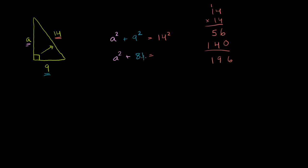So a squared plus 81 is equal to 14 squared, which is 196. Then we could subtract 81 from both sides of this equation. Let's subtract 81 from both sides. On the left-hand side, we're going to be left with just the a squared. These two guys cancel out. The whole point of subtracting 81. So we're left with a squared is equal to 196 minus 81.